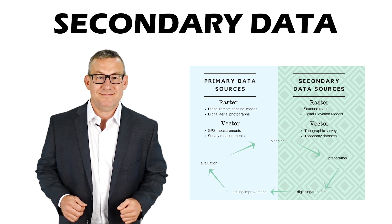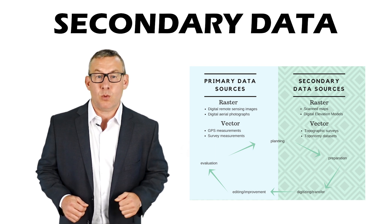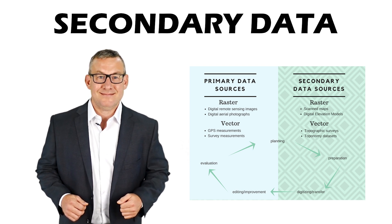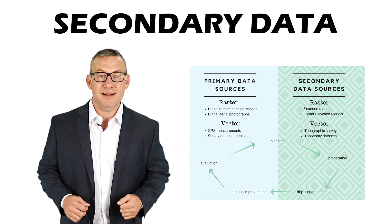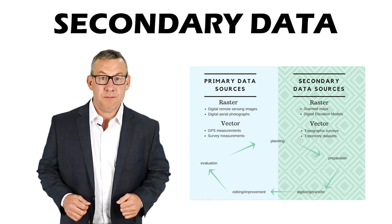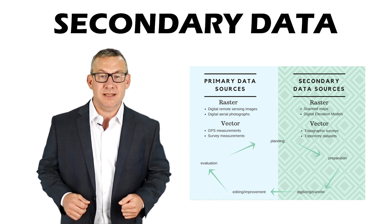Secondary Data is data derived from other sources that were not collected for the specific project the data is being used in. This usually consists of data sets from government entities that weren't specifically prepared for the project at hand. A scanned map is a secondary source because transferring the data between media formats reduces accuracy and detail.